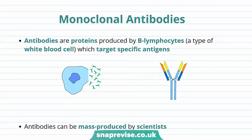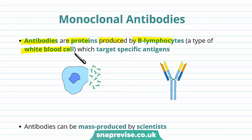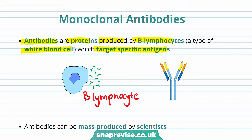So we've met antibodies before but just a reminder that antibodies are proteins produced by B lymphocytes. This is a type of white blood cell and these target specific antigens. So this is what a B lymphocyte looks like. This Y-shaped structure here is an antibody.